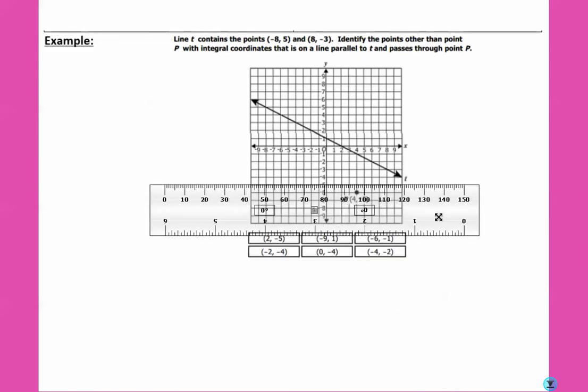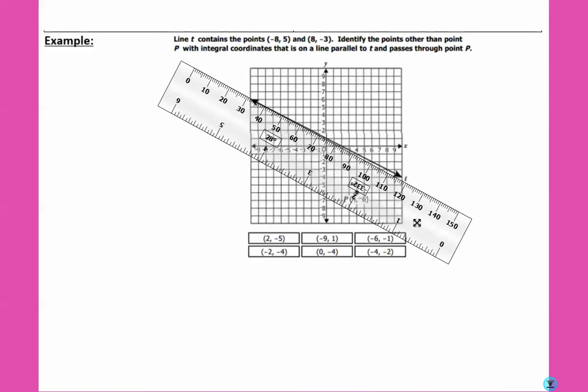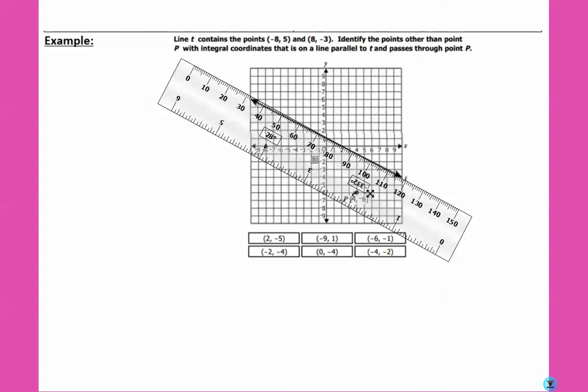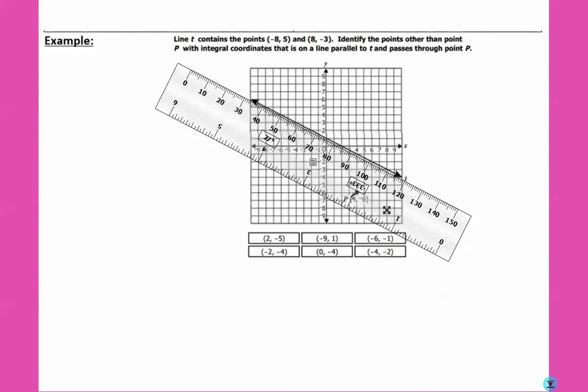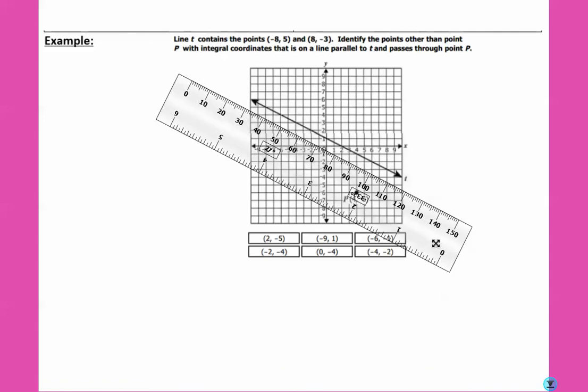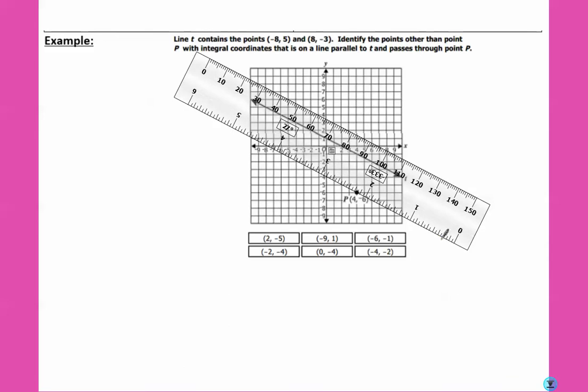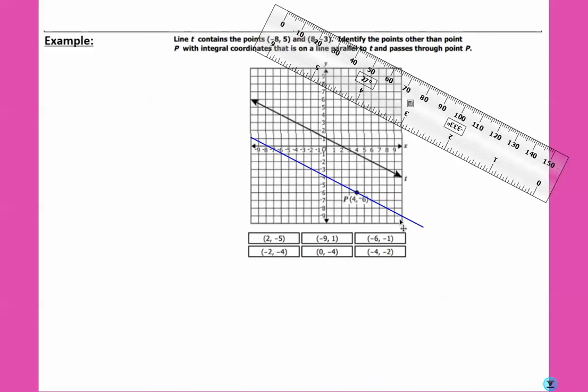I'm going to take my ruler, and I am going to line it up with line T. So now that I have my ruler, I can move it around, and as long as I'm just moving where the ruler is and not turning the ruler, it'll stay the same parallel slope. So I'm going to line this up with point P. And now I'm going to draw a line. Move my ruler out of the way so it's easier to see. And now I'm just going to check and see which of these points are on the blue line I just drew.